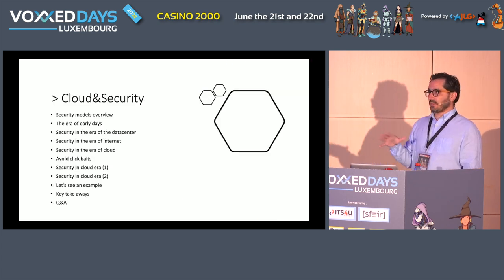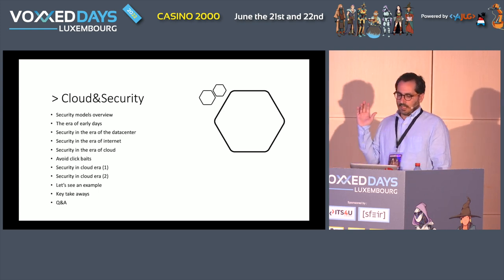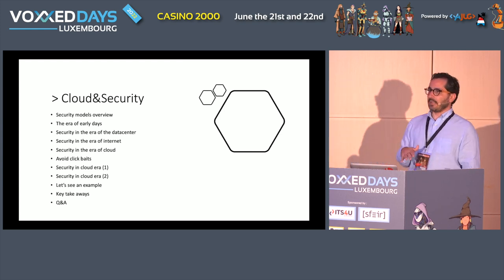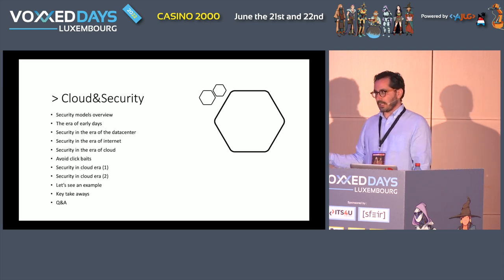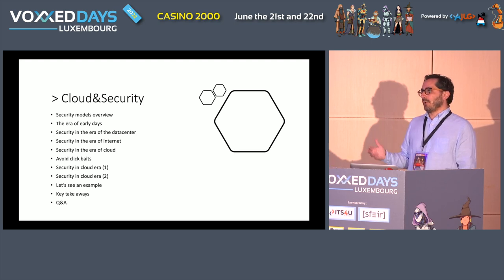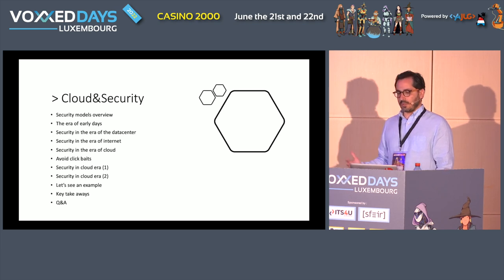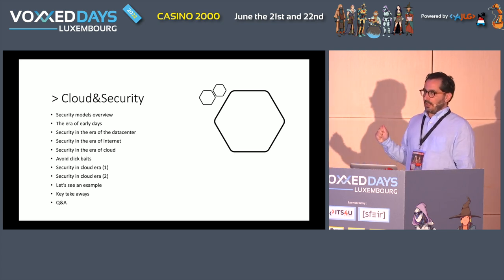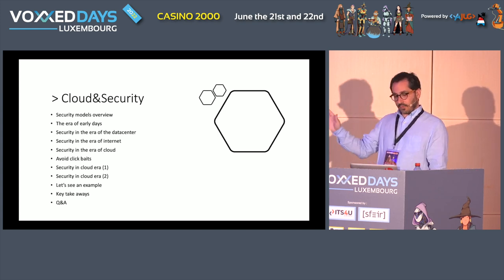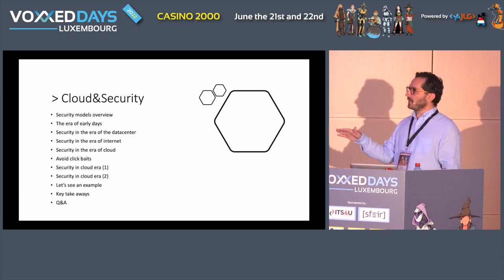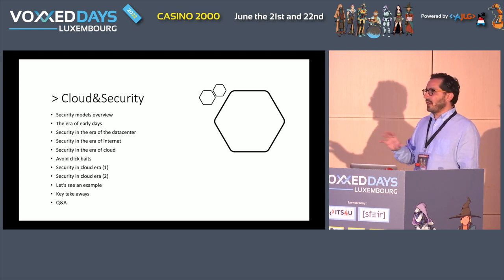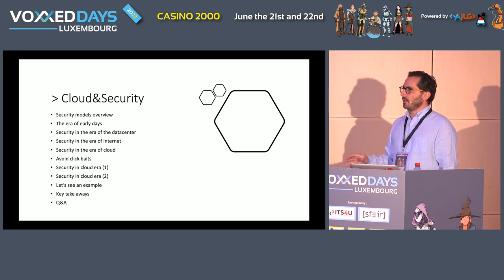A little bit of agenda: we will discuss an overview of security models, then move on to the different phases of security models on software systems and how they evolved. We will drill into the details of each era, speak about the big buzzwords everyone uses around security, and then focus on how you should approach security. If time allows, we'll look at an example with code in a full lifecycle, do a Q&A, and cover key takeaways.